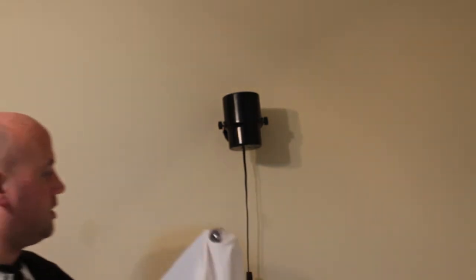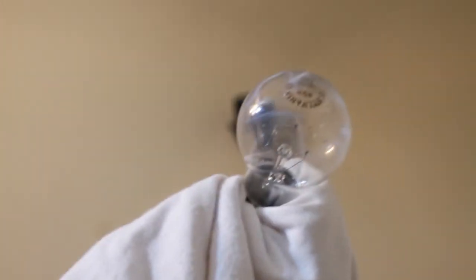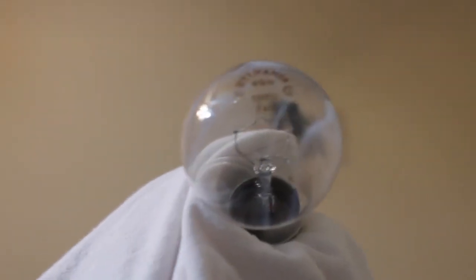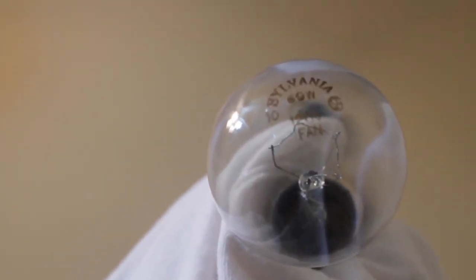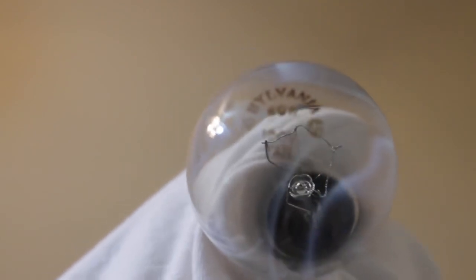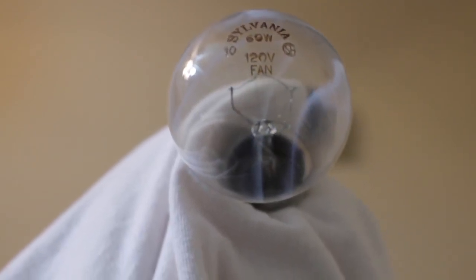So that is the bulb that was in there. Let me zoom in close to see if it's started to cook the shirt onto it. You can see what that says. 60 watts, 120 volt for a fan. It's a little bulb. Here's my hand. Let me show you a regular-sized bulb in comparison.